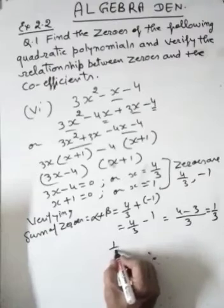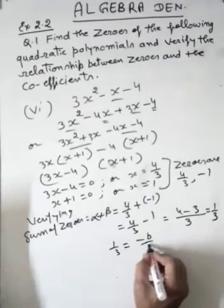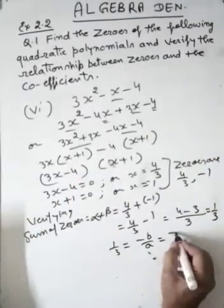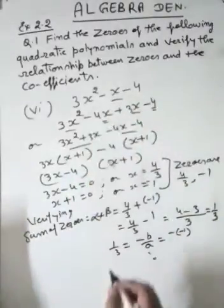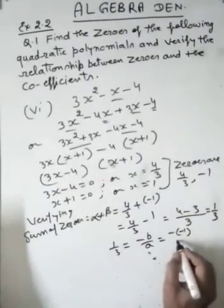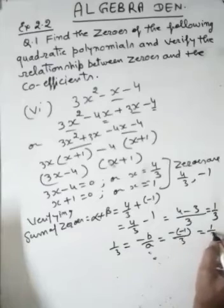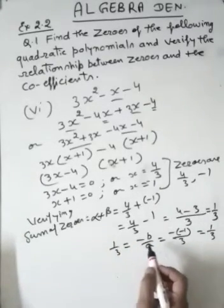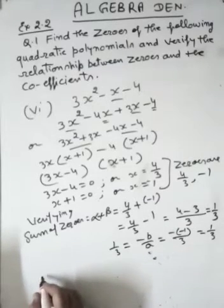This must be equal to minus b upon a. The coefficient of x is minus 1, and the coefficient of x squared is 3, so minus b upon a equals 1 upon 3. That means alpha plus beta equals minus b upon a — this is 1 upon 3 each, and it is verified.